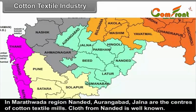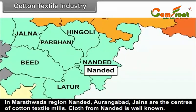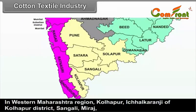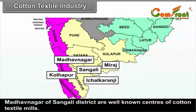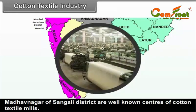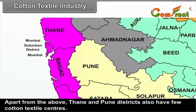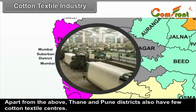C. Aurangabad Division: In the Marathwada region, Nanded, Aurangabad and Jalna are the centres of cotton textile mills. Cloth from Nanded is well known. D. Pune Division: In western Maharashtra region, Kolhapur, Ichalkaranji of Kolhapur District, Sangli, Miraj and Madhavnagar of Sangli District are well known centres of cotton textile mills. Solapur and Barshi of Solapur District also have cotton textile mills. Apart from the above, Thane and Pune districts also have a few cotton textile centres.